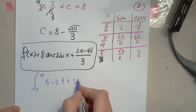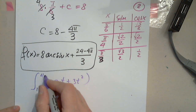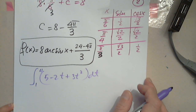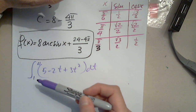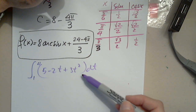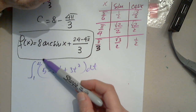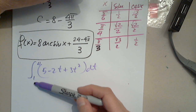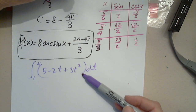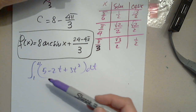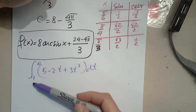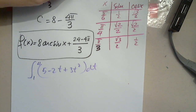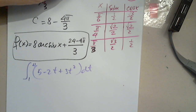We have the integral of 5 minus 2t plus 3t squared dt. I always check whether the function is continuous on the interval 1 to 4. It's a definite integral, and if the function is not continuous on that interval, then I cannot apply the Fundamental Theorem of Calculus.